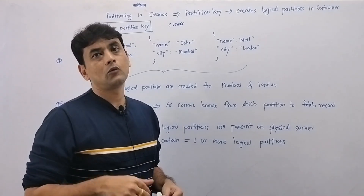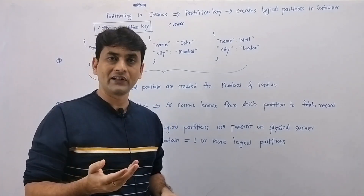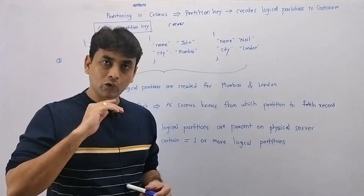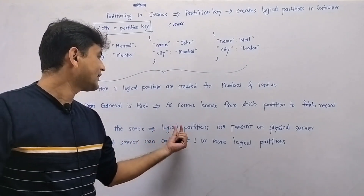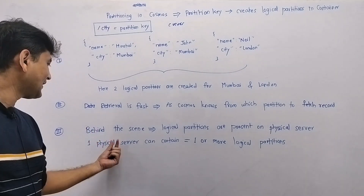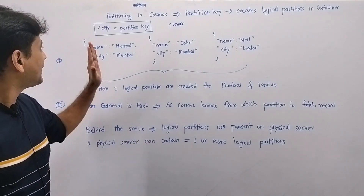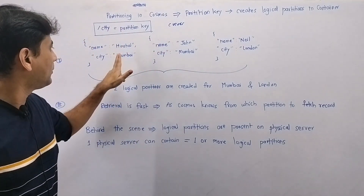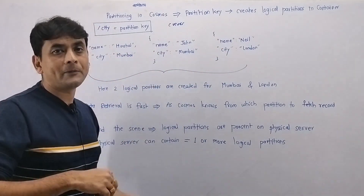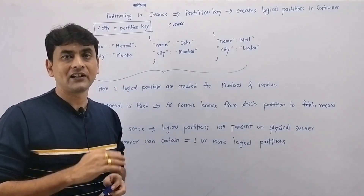Though Cosmos Database is managed for us by Azure, behind the scenes it is present on physical servers. These logical partitions are stored on physical machines, and one physical server can contain one or more logical partitions. So it's possible that both partitions — one for city Mumbai and one for city London — may be on the same physical server, or they may be on different physical servers.